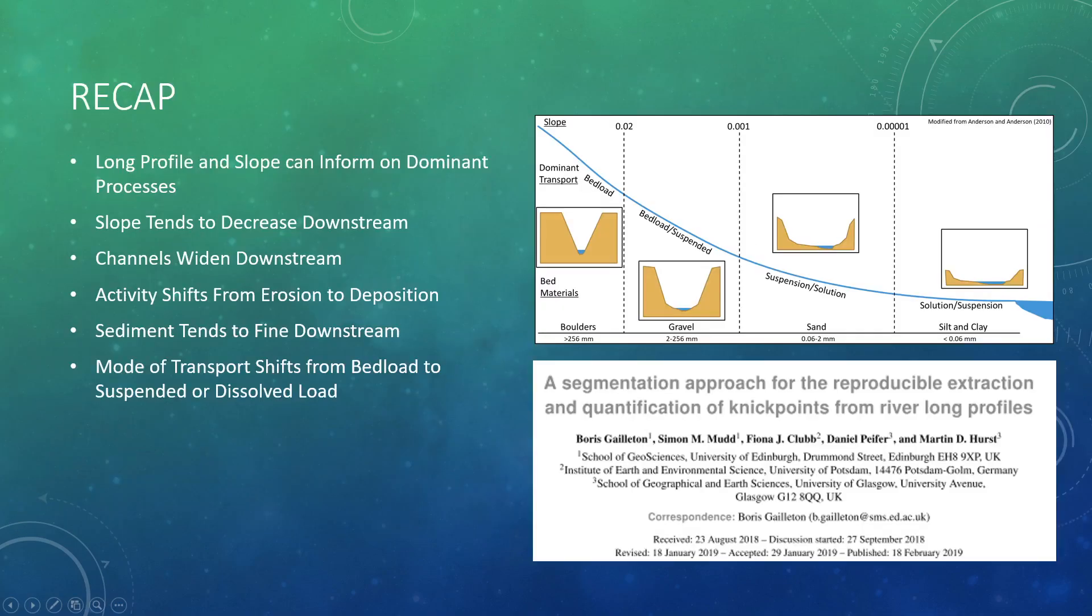So to recap, we talked about how the long profile and slope of a river can suggest dominant processes in a river. We know that slope tends to decrease downstream while channels widen. We move from erosional to depositional systems. Sediments tend to fine or decrease in size. And we shift from bed load to suspended and dissolved loads. So if you're interested in learning more about longitudinal profiles and how we use them to understand the evolution of a river, I would suggest this recent paper by Boris Gaitan and others. I've provided a link to this paper and all others referenced in this lecture in the description below the video. So I hope you enjoyed the video and stay tuned for more.